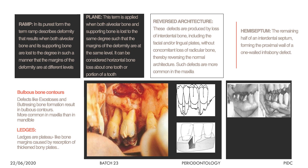A hemiseptal defect is a type of one-wall defect where only one side of the tooth is affected — for example, a hemiseptal defect on the distal aspect of the tooth with only one wall present, while on the mesial aspect of the tooth there is no bone loss.